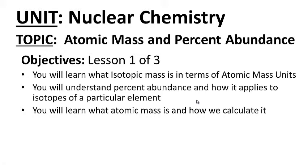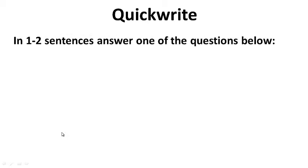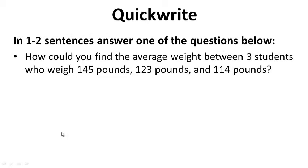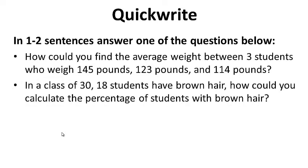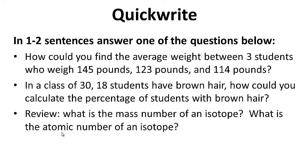Feel free to pause this video anytime for your quick write. How could you find the average weight between three students who weigh 145 pounds, 123 pounds, and 114 pounds? In a class of 30, 18 students have brown hair — how could you calculate the percentage of students with brown hair? A little review: what is the mass number of an isotope? What is the atomic number of an isotope? Go ahead and pause while you do your quick write.